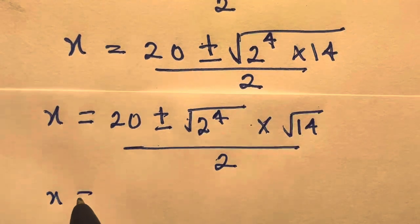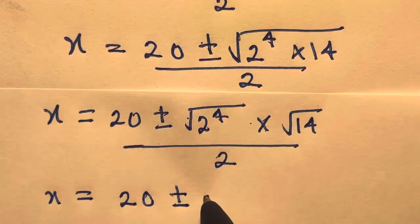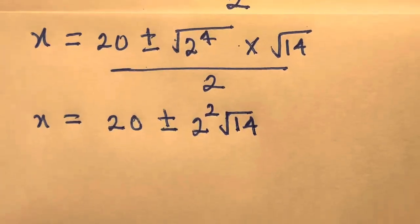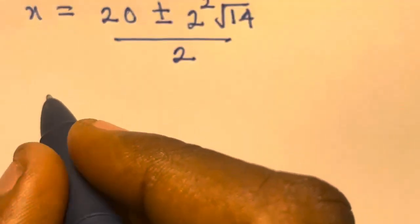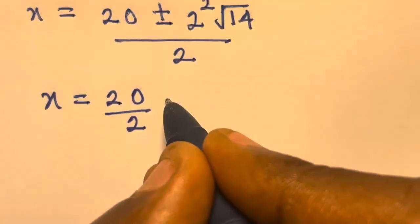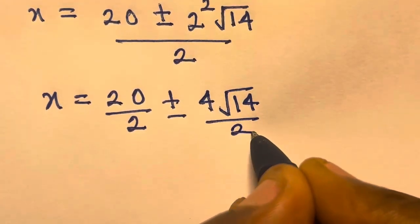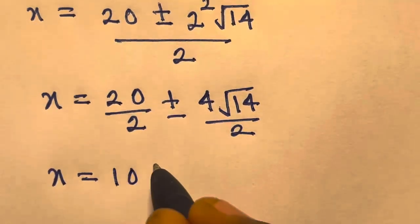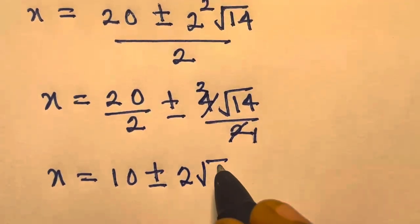Here we have x equals 20 plus or minus, and the square root of 2 raised to the power of 4 will give us 2 raised to the power of 2, multiplied by square root of 14, which is 4 root of 14. Divided by 2, we get x equals 20 divided by 2 plus or minus 4 root of 14 divided by 2, giving x equals 10 plus or minus 2 root of 14.